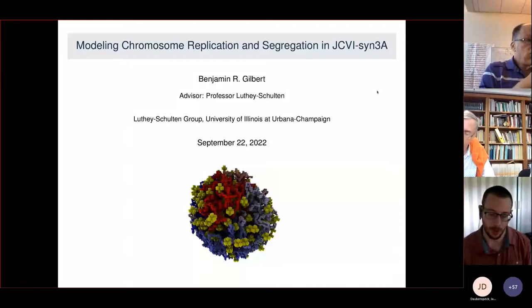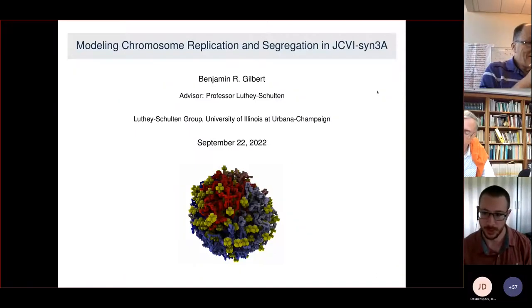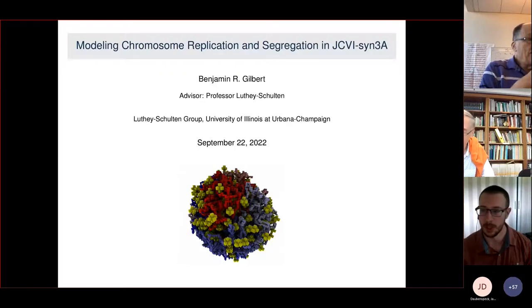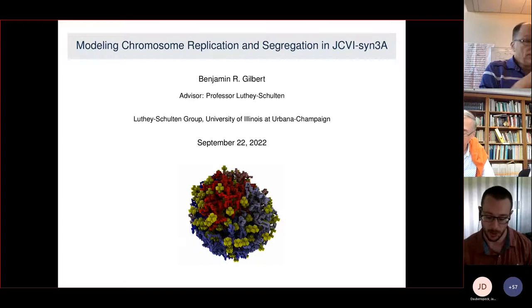Hi there, my name is Ben Gilbert. I'm a PhD student with Zan-Luthi-Scholten at the University of Illinois, and today I'm going to be talking about the work that we've been doing on modeling chromosome replication and segregation in JCVI-SYN3A.